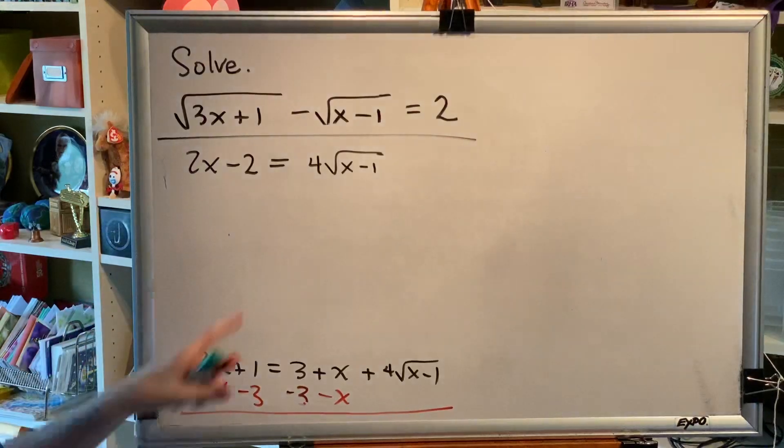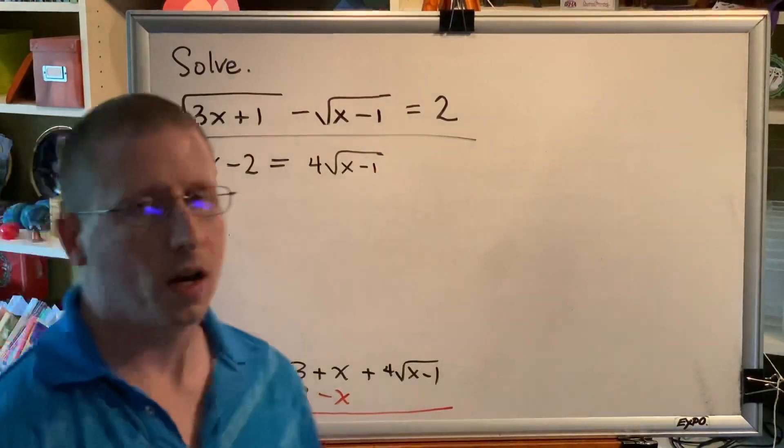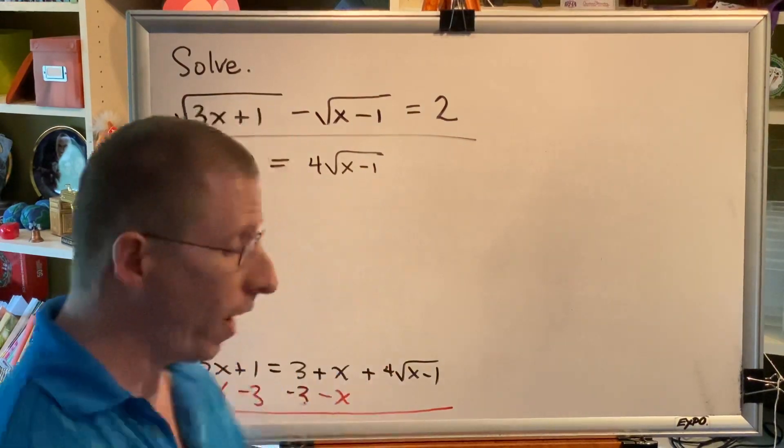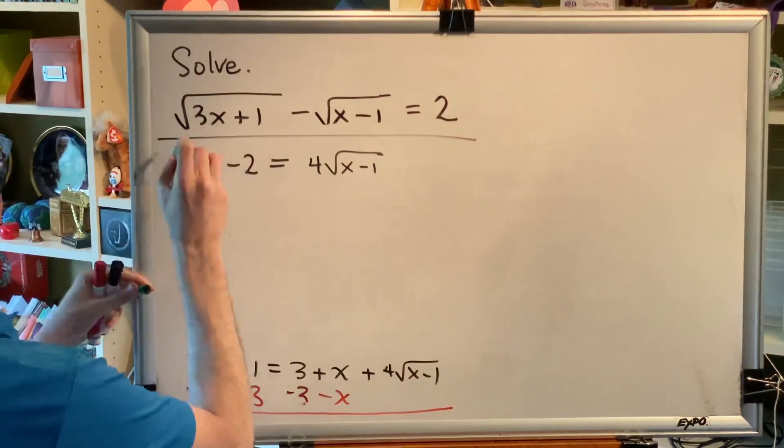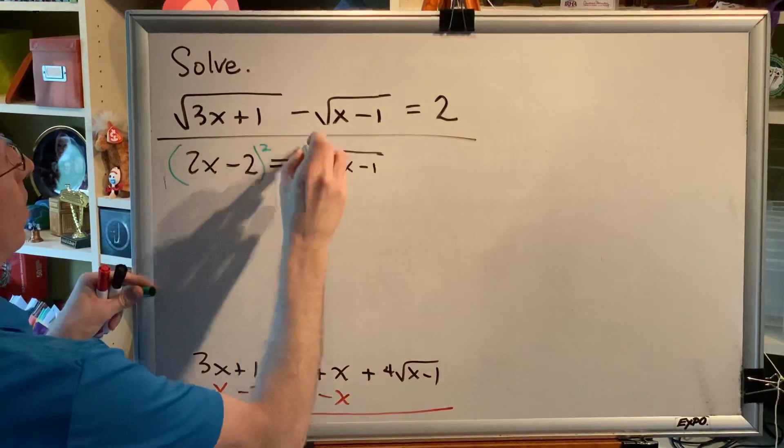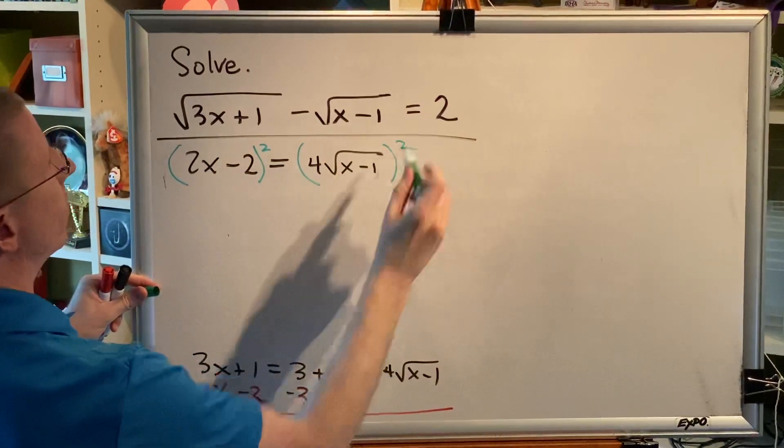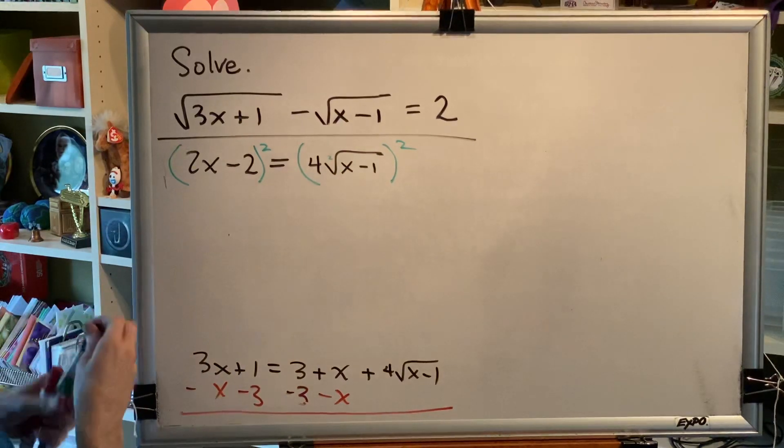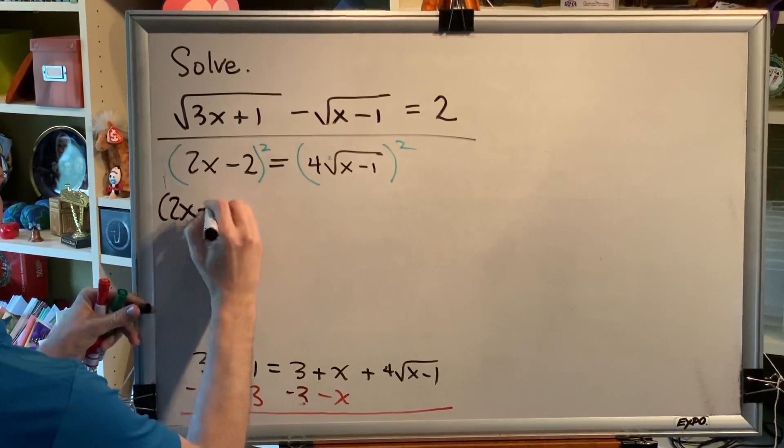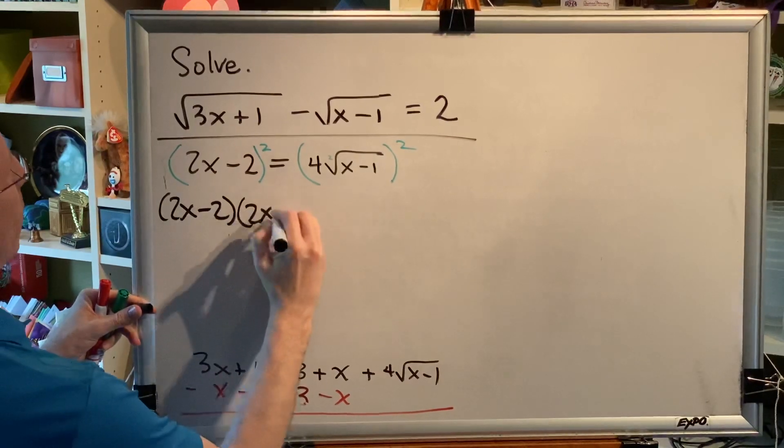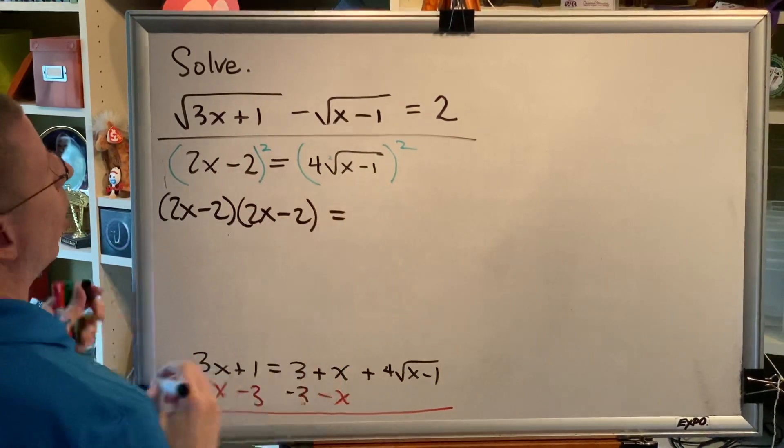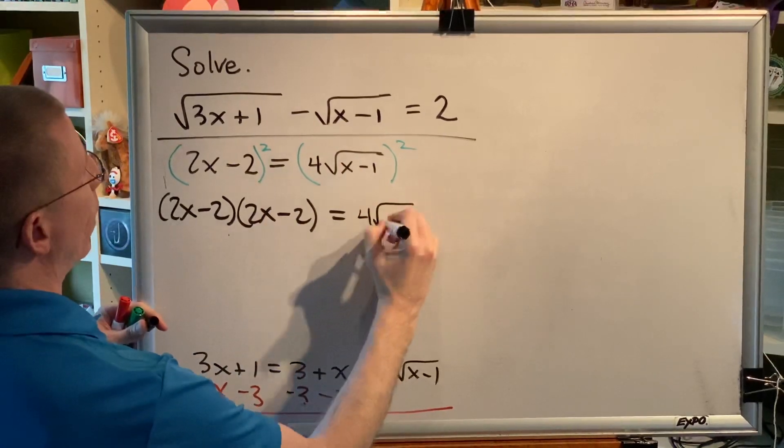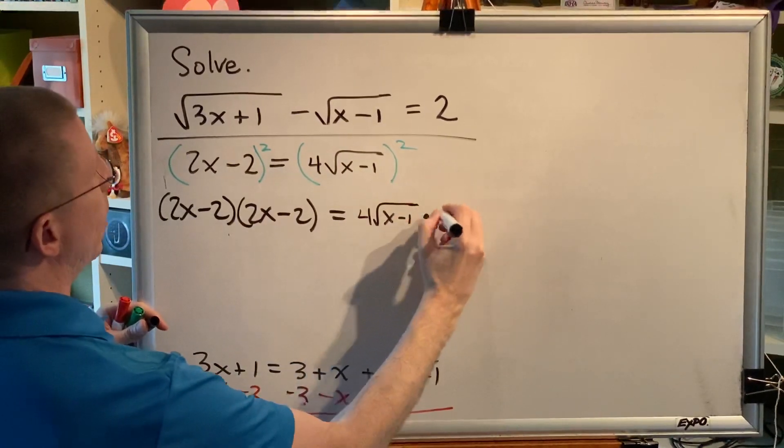This is considered isolated because it has no adding or subtracting before or after it. One multiplying value is okay. So we're going to raise both sides to the power that matches the index of the isolated radical. This is a square root. So on the left, we're going to use FOIL, 2x minus 2 times another, 2x minus 2. On the right, we're going to recognize that this is the base, 4 radical x minus 1 times itself.